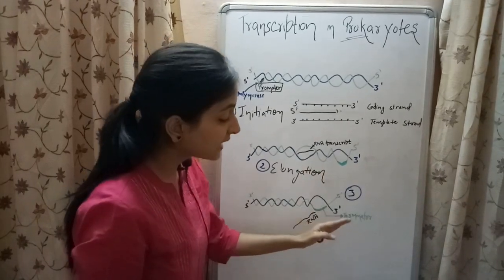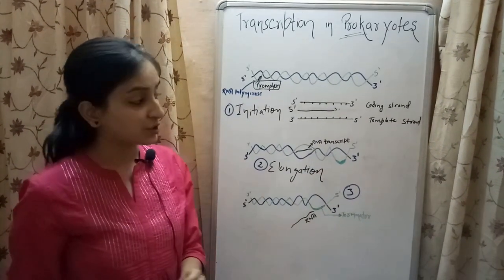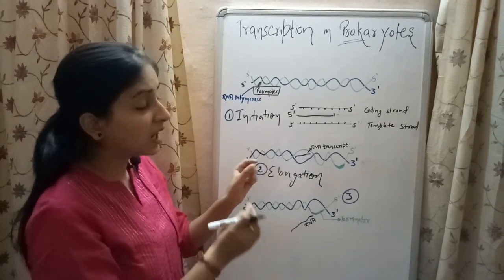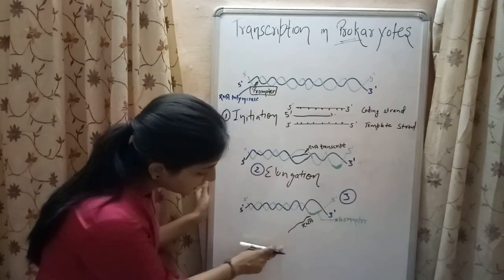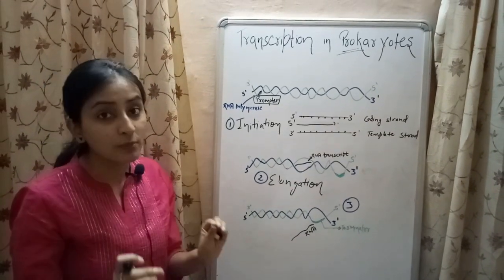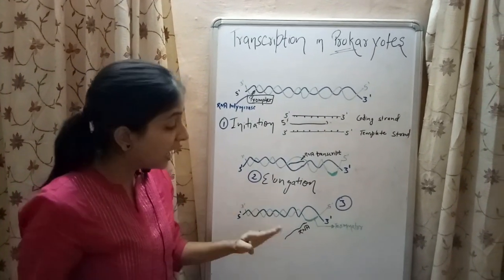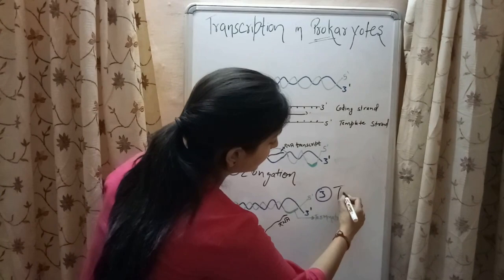When the RNA polymerase reaches the terminator region, it gets detached from the RNA transcript, and the RNA transcript is released from the RNA polymerase forming a hairpin-like structure. This step is called termination.